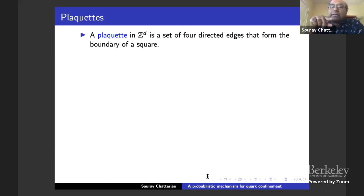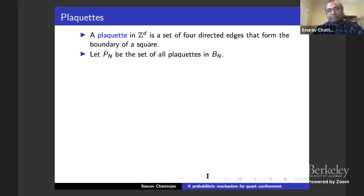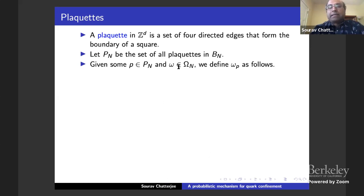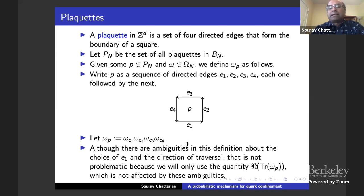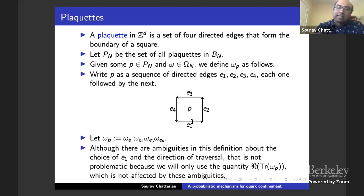A plaquette is a set of four directed edges that form the boundary of a square. Let P_N be the set of all plaquettes in this large box. Given a plaquette P and a configuration, define Omega_P as the product of the matrices along the edges E1, E2, E3, E4 going in some direction. We'll need the quantity: the real part of the trace of Omega_P. This is not affected by the choice of which edge is first. So you have matrices attached to edges, and from that you get matrices attached to plaquettes.